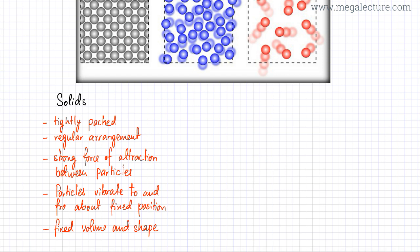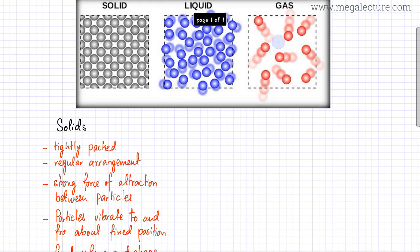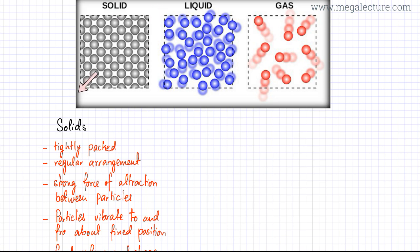In solid state, a solid always has a fixed volume and a fixed shape. Its shape doesn't change and its volume doesn't change much — they're not very compressible. So with a fixed volume and a fixed shape, a solid retains its shape. Although it is possible to change the shape when you apply a force, as long as a solid is present on its own, it's going to retain its shape and its volume.